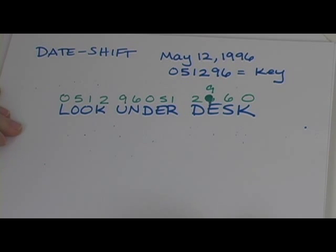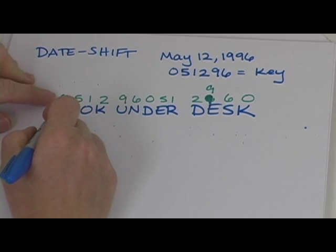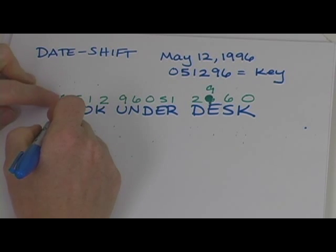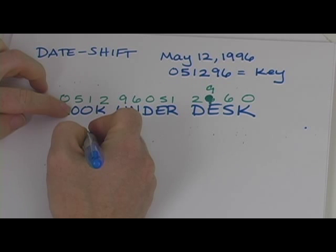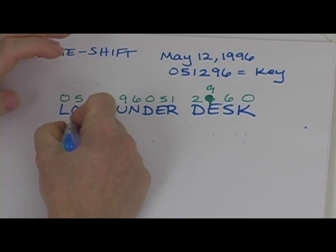And to encode the message, you are going to shift by the number that is above the letter. So for example, L has a zero shift so that is just going to be L. But O is going to shift five. So you count. So O, P, Q, R, S, T. So that will be a T.